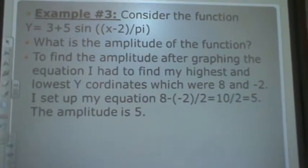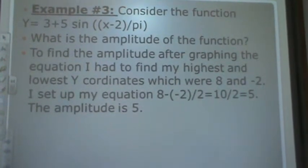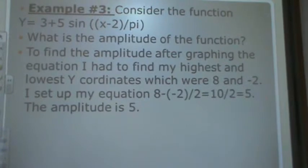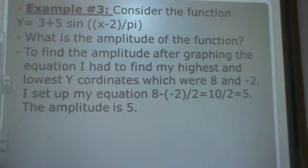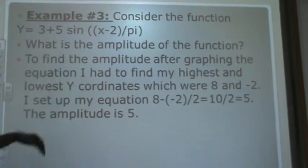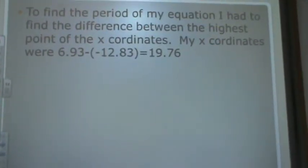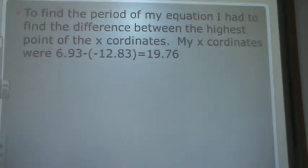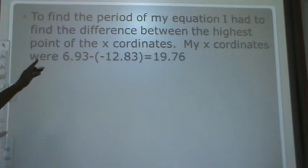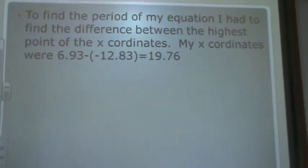I set up my equation 8 minus negative 2 divided by 2 equals 10 divided by 2 equals 5. The amplitude is 5 as you can also see in the equation. And to find the period of my equation, I had to find the difference between the highest point of the x coordinates. My x coordinates were 6.93 and negative 12.83 which gave me 19.76.